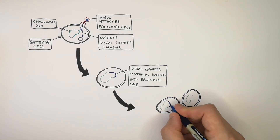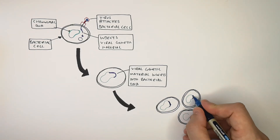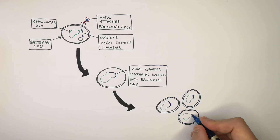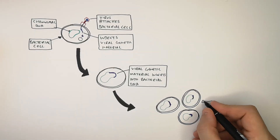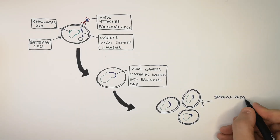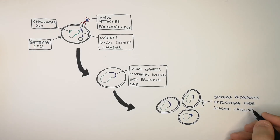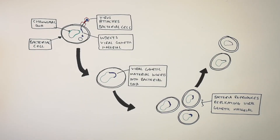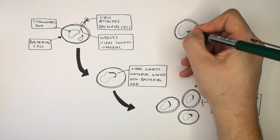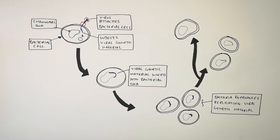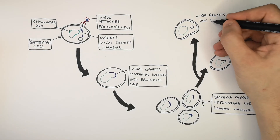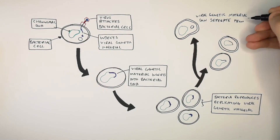The bacteria contains the viral DNA inside its chromosomal DNA, so the bacteria reproduces, replicating the viral genetic material inside it. This process can go on and on. Occasionally, the bacterial chromosomal DNA and the viral genetic information can separate — the viral genetic material separates from the bacterial DNA.